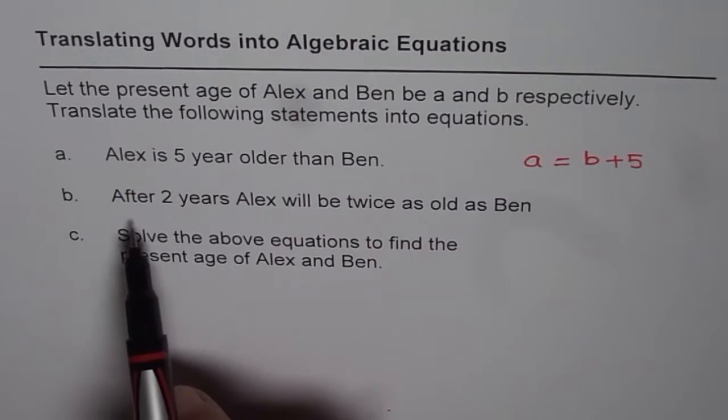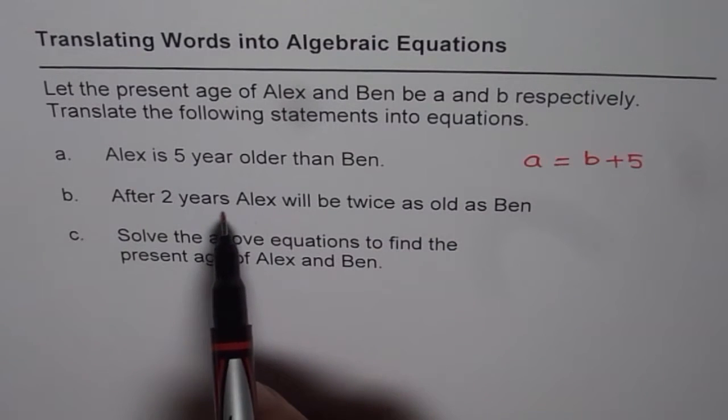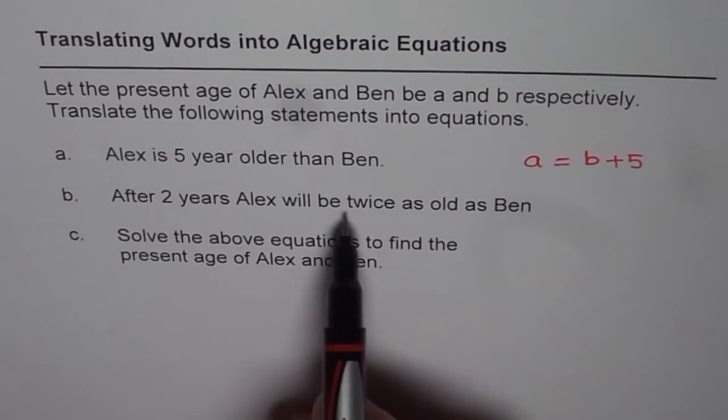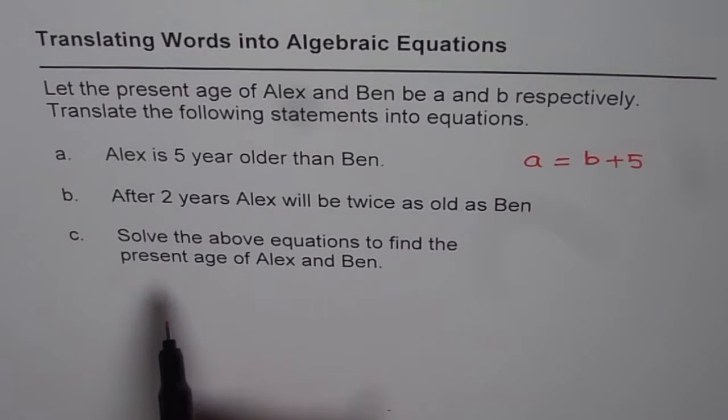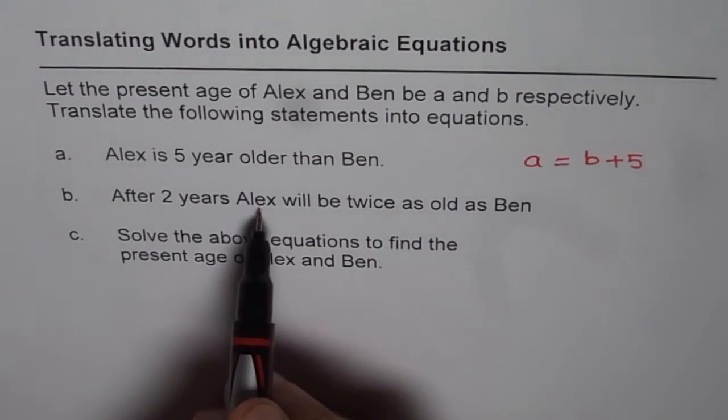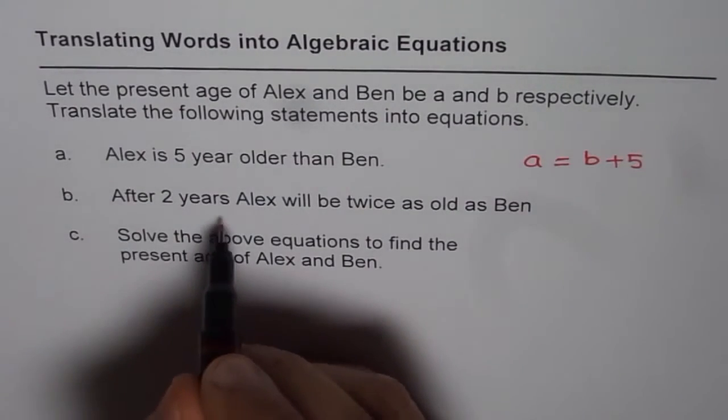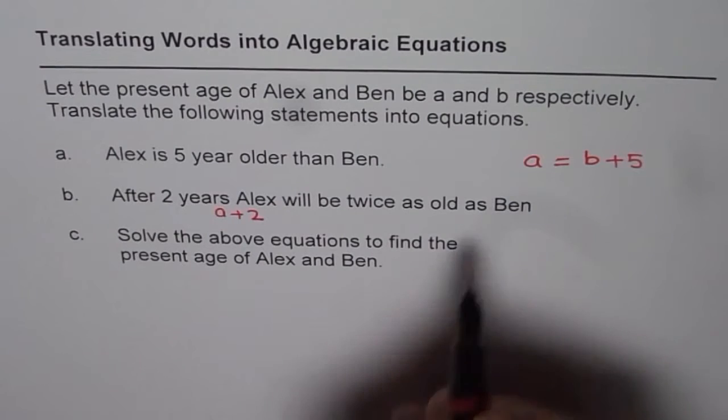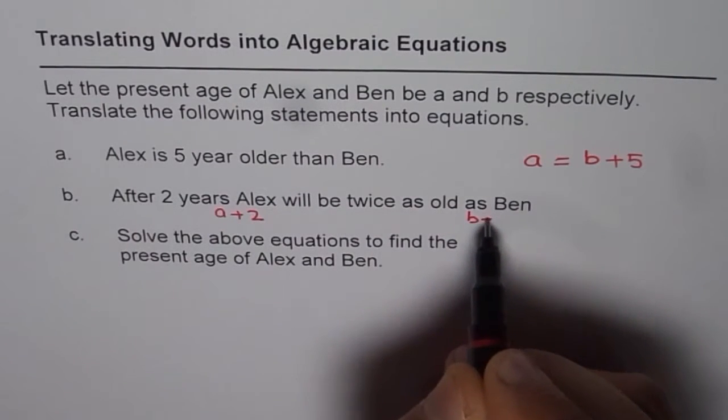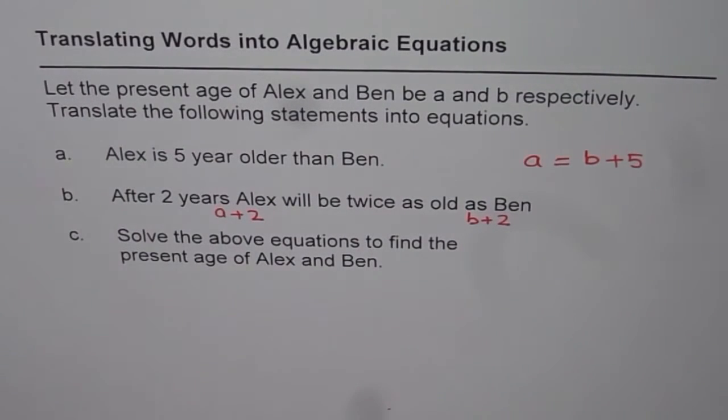The second one is, after 2 years, Alex will be twice as old as Ben. So after 2 years, what is going to be the age of Alex? After 2 years, it will be A plus 2 for Alex, and for Ben it is going to be B plus 2.